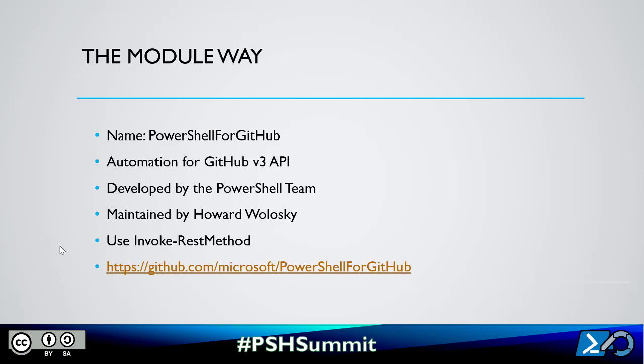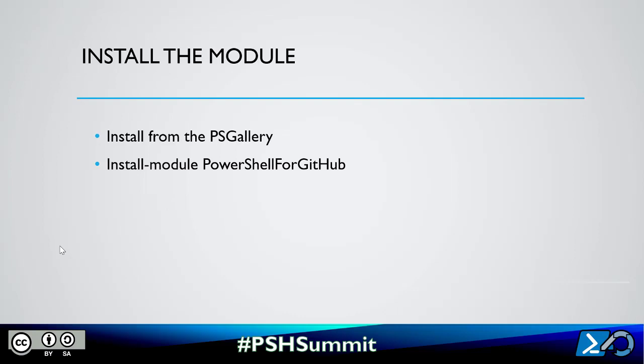The module allows you to automate with the GitHub API. Everything is well explained on the GitHub page. To install the module, you can install it from the PowerShell Gallery using install-module PowerShellForGitHub. In my case, I added a variable — I check if the module is installed using get-installedmodule. If it's not installed, I will install it; if it is, I will import it.